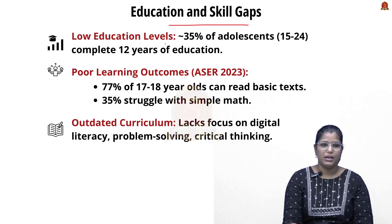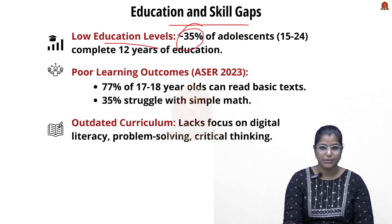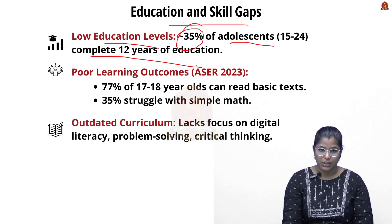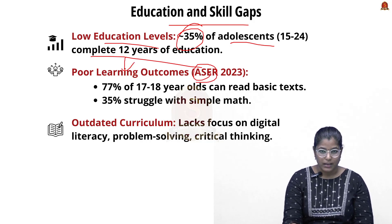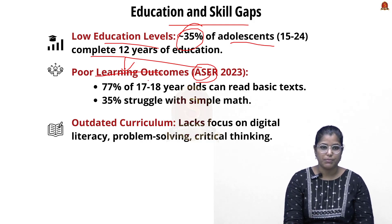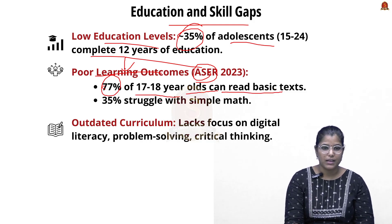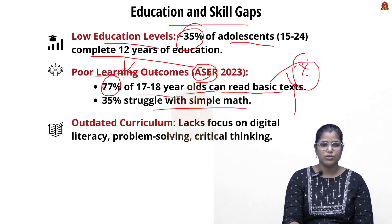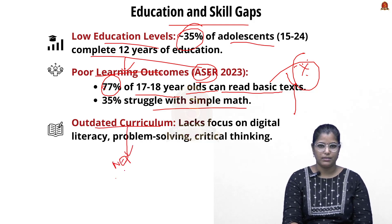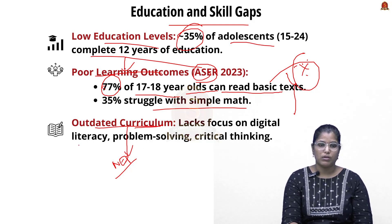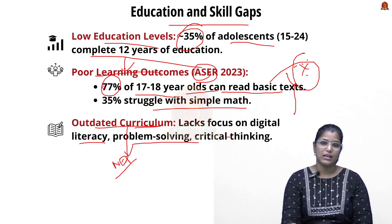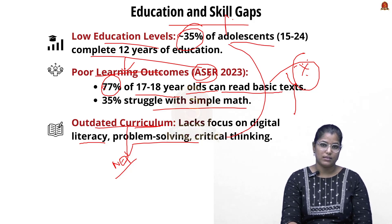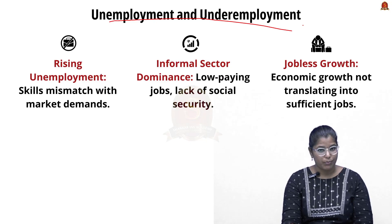On education and skill development: only about 35% of adolescents complete 12 years of education. As per Annual Status of Education Report (ASER) 2023, there are poor learning outcomes — 77% of 17–18 year-olds can read basic text, but 35% struggle with simple math. The outdated curriculum lacks focus on digital literacy, problem-solving, and critical thinking, which generates significant education and skill gaps. The recently introduced NEP needs to be implemented soon to address this.